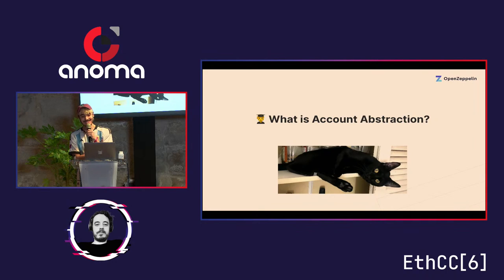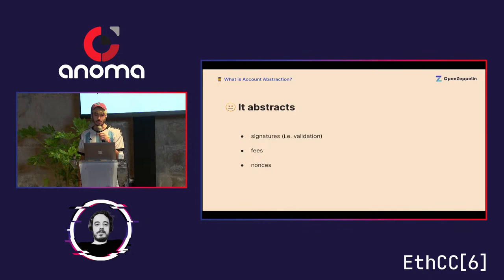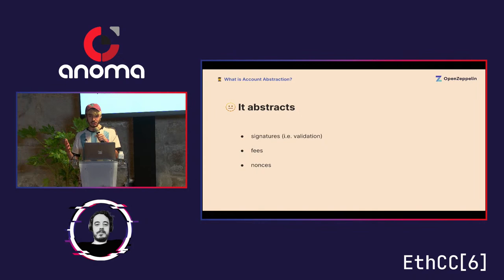So what is account abstraction? Basically, it means abstracting a few aspects of accounts, like signatures — this means validation of transactions we send through — abstracting fees, which is paying with any token or letting someone else pay transactions for you, and abstracting nonces. This is to prevent replays. Today we have sequential nonces in Ethereum and many other networks, and the idea is to have different strategies to prevent these replays — parallel nonces, non-sequential nonces, whatever you want, as long as it protects you.